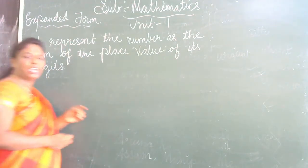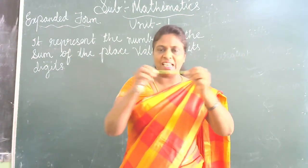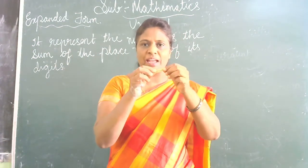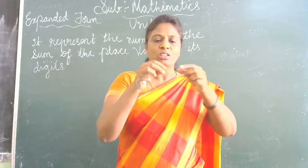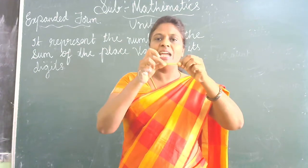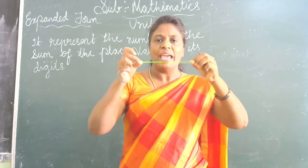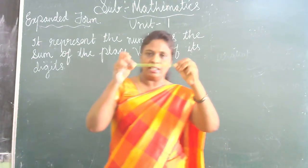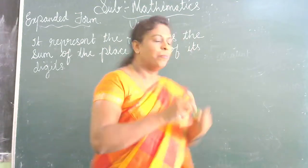For example, can you see this? This is a rubber band — a small rubber band. First it will be like this, a very small rubber band. So when you pull both sides, it will expand. This is called Expanded Form.